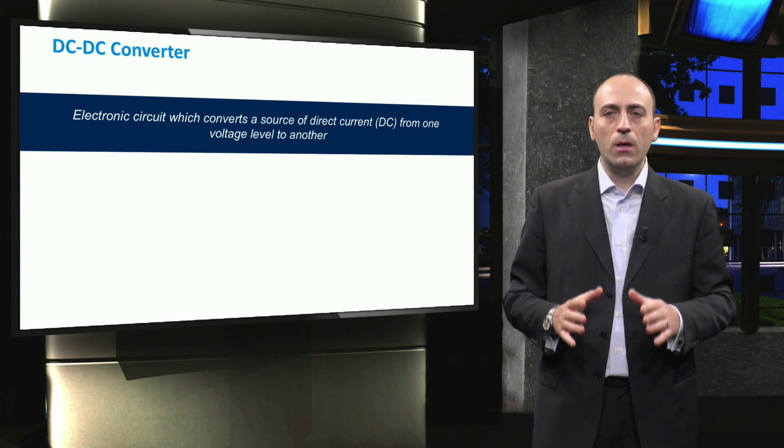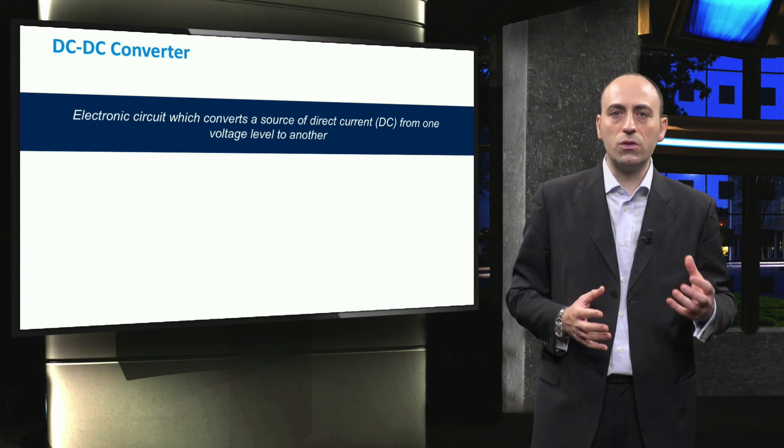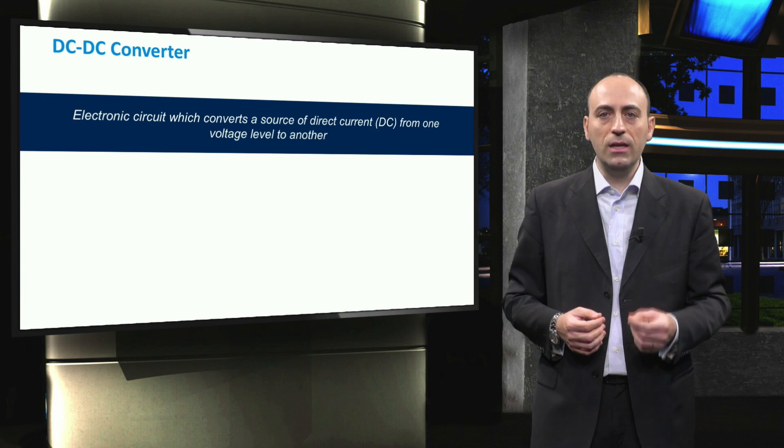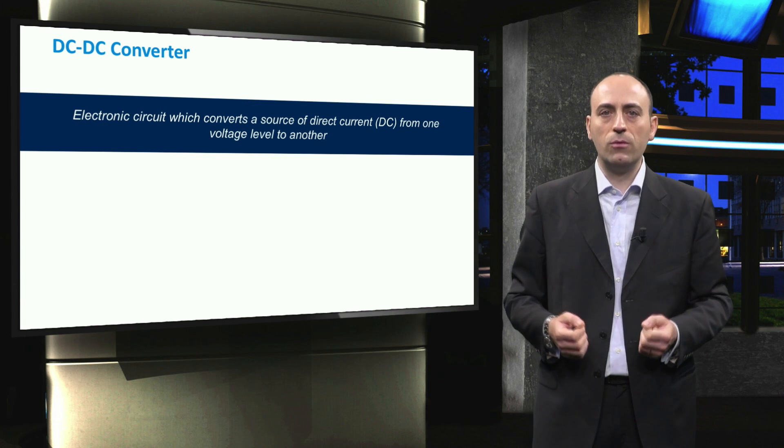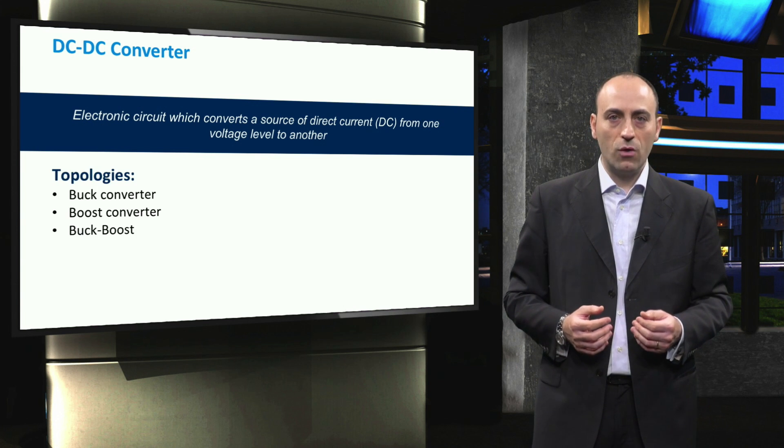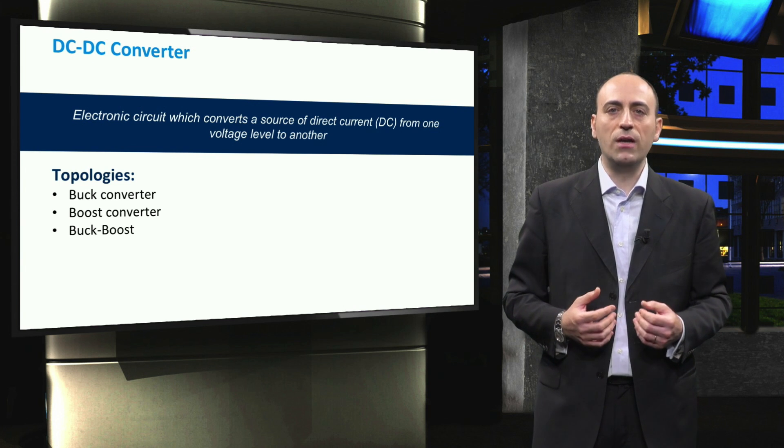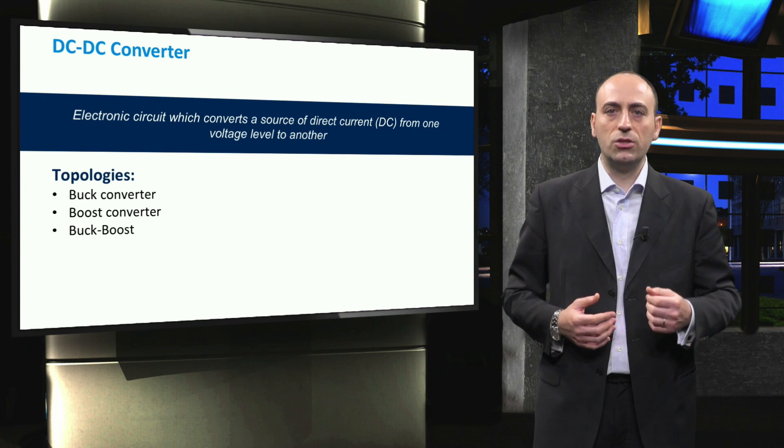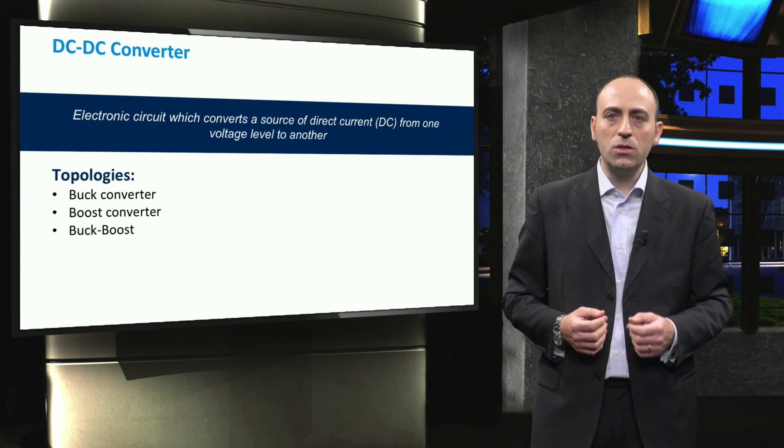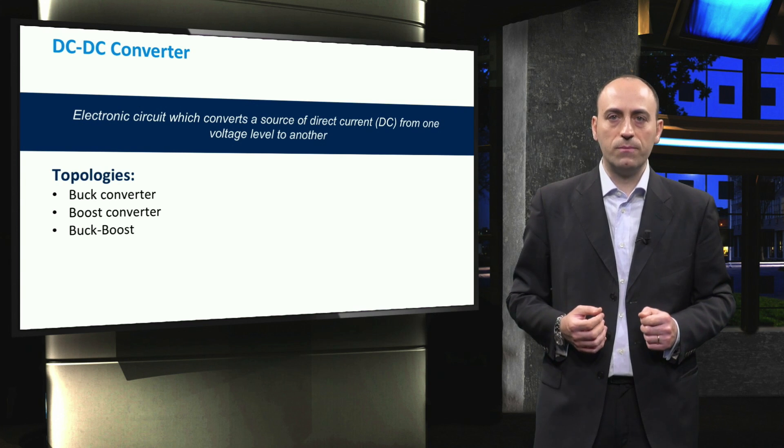To conclude this video, the DC-DC converter has been defined as an electronic circuit that converts a source of direct current from one voltage level to another. The objective of an ideal converter is to draw the maximum power from the PV panel and supply it to the load. There exist three different types of converters: buck converter that decreases the voltage of the PV side, boost converter that increases the voltage, and buck-boost which includes both previous cases. In the next videos, we shall explain in more detail these three types of converters and their components.